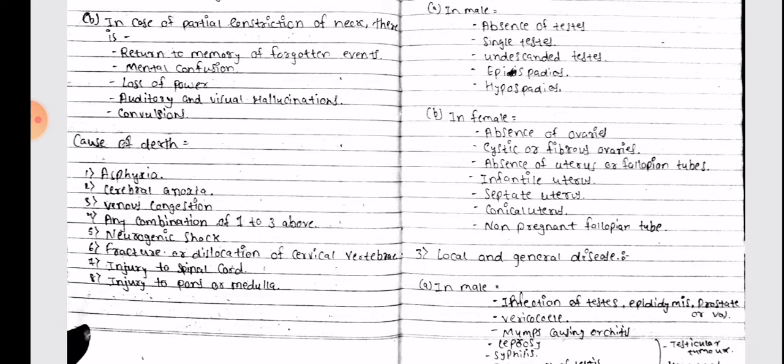In female - absence of ovaries, cystic or fibrous ovaries, absence of uterus or fallopian tubes, infantile uterus, septate uterus, conical uterus, non-patent fallopian tube.